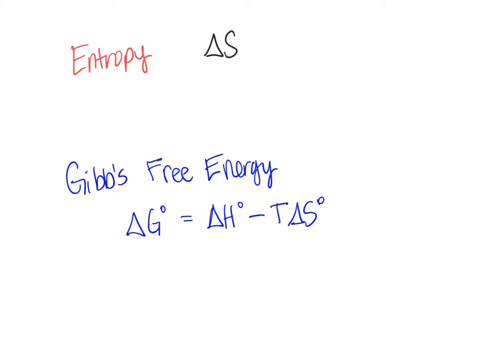And remember, second law of thermodynamics, entropy of the universe is increasing. So a positive delta S is favorable. Whereas a negative delta H is favorable because it means your products are lower in enthalpy than your reactants. A positive delta S is favorable.